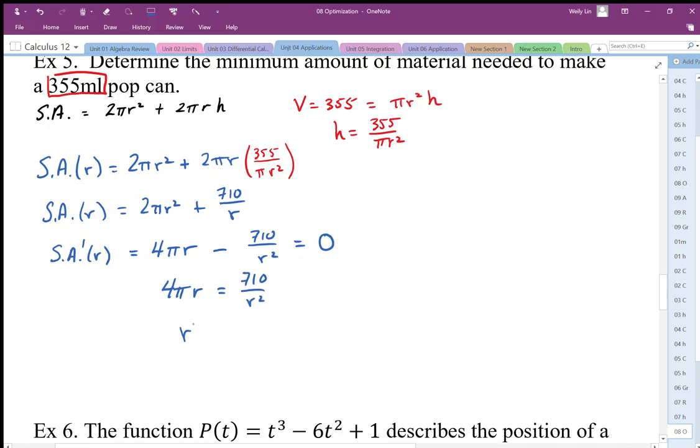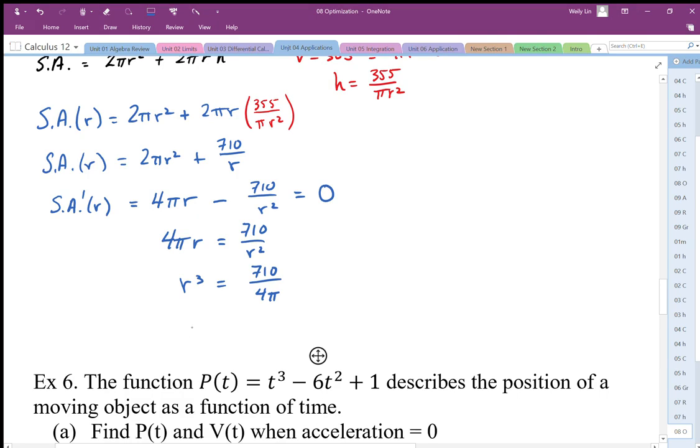I end up with r³ equals 710 over 4π. This simplifies to r equals the cube root of 710 over 4π, which is 355 over 2π. As a decimal value, I need to type this into my calculator.